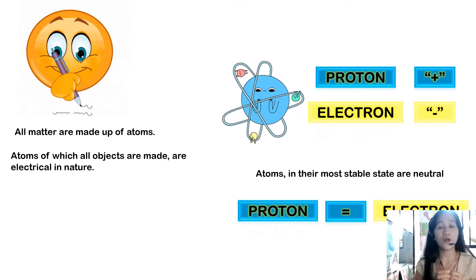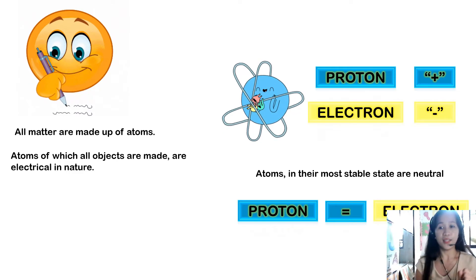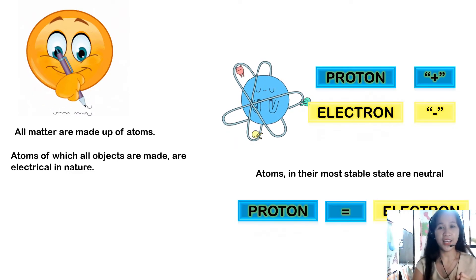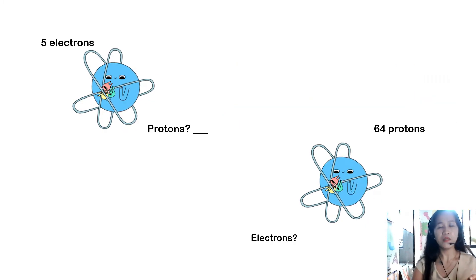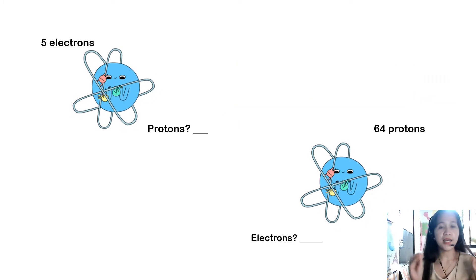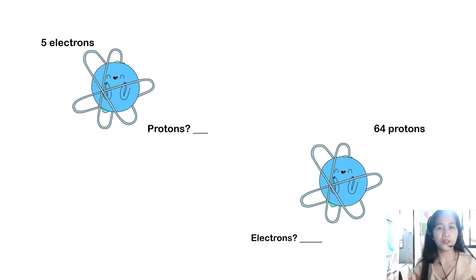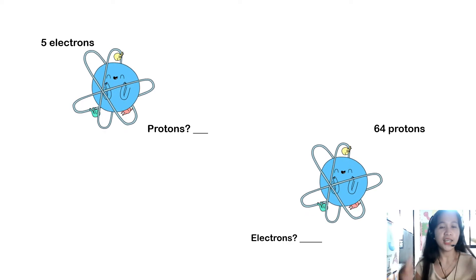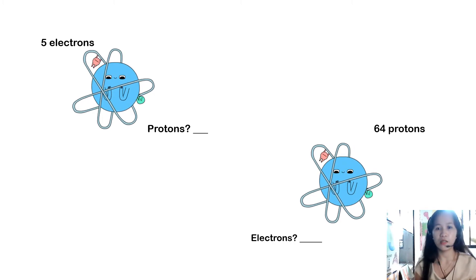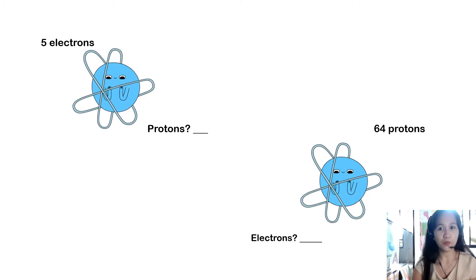Keep this in mind: atoms are in their most stable, neutral state when the number of protons equals the number of electrons. For example, if an atom has 5 electrons, how many protons does it have? And if an atom has 64 protons, how many electrons does it have?